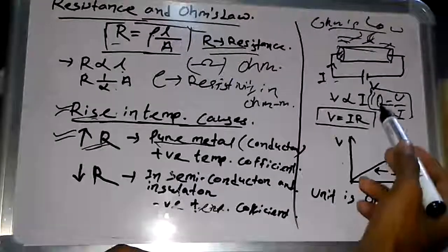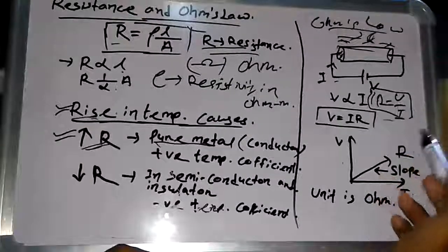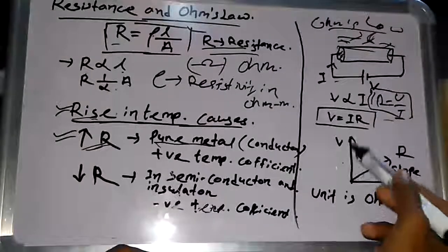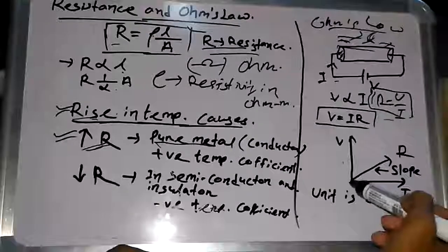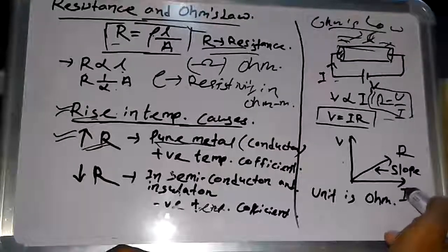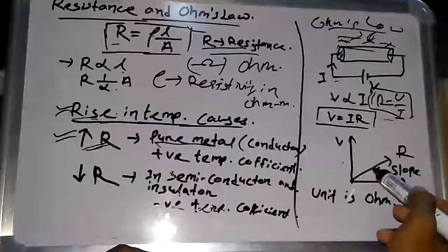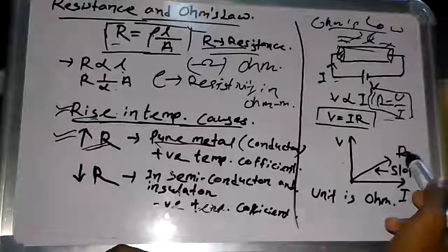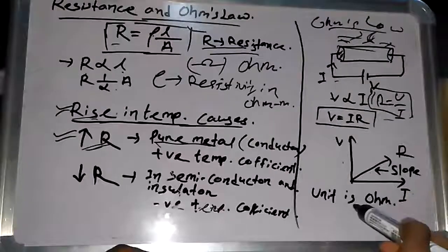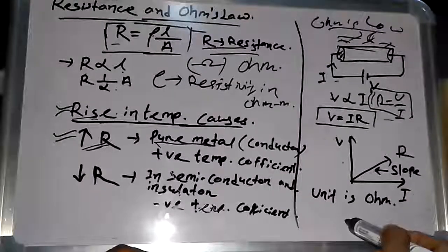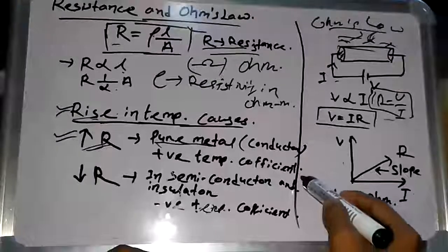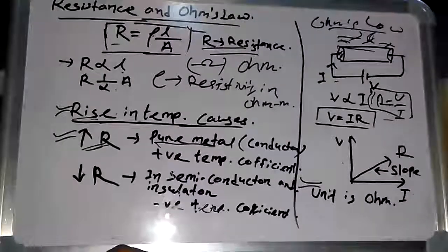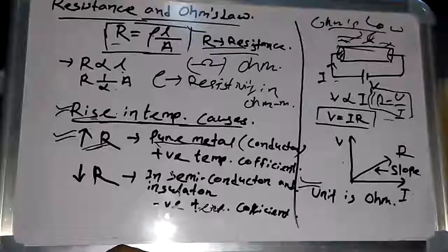On a V-I graph, voltage V is plotted on the Y-axis and current I is plotted on the X-axis. The slope of this graph is V upon I, which equals the resistance R. The unit of resistance is ohm. Thank you for today's class.